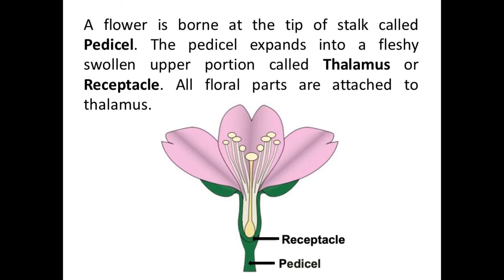A flower is borne at the tip of a stalk called the pedicel. The flower starts from the tip of the stalk — that tip is called the pedicel. This pedicel expands into a fleshy swollen upper part, and that fleshy swollen upper portion is known as the thalamus or receptacle. All the other floral parts are attached to that thalamus or receptacle.